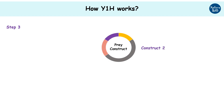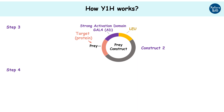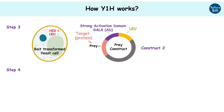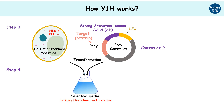The second construct is called the prey construct. It has the gene coding for the protein of interest, or prey, and the activation domain of a transcription factor, such that the expressed protein is a fusion of both genes. This construct also has a selection marker, leucine, to screen the transformed cells. Next, this prey construct is transformed into the previously cultured yeast cells containing the bait construct on media lacking histidine and leucine.